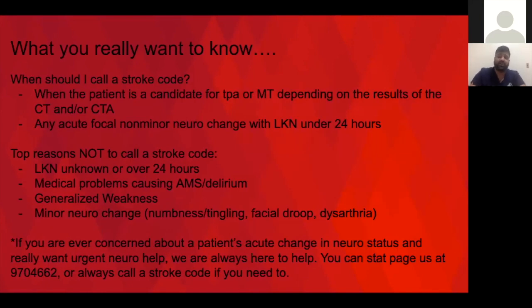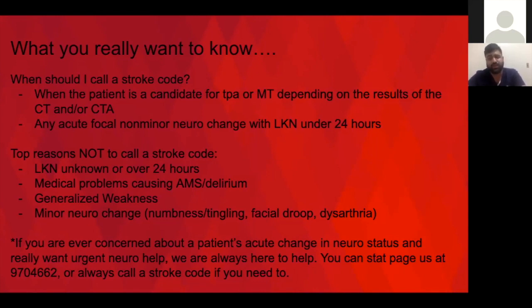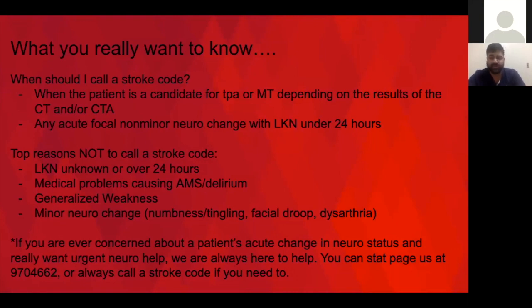To summarize what you need to know as a medicine doctor about when to call a stroke code: the correct answer is when the patient is a candidate for TPA or mechanical thrombectomy, depending on CT or CTA results. If you can't remember the criteria, a good summary is any acute focal non-minor neuro change with the last normal under 24 hours — non-minor because you need a functionally disabling deficit for TPA, and a stroke scale of at least 6 for thrombectomy.